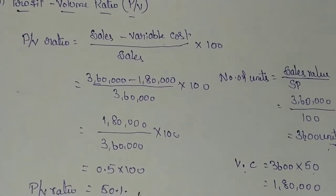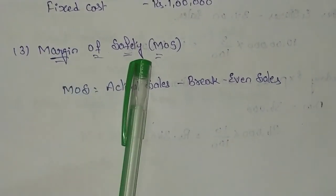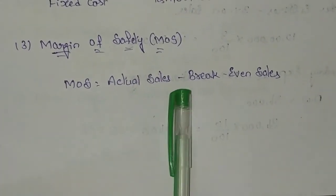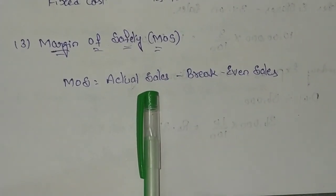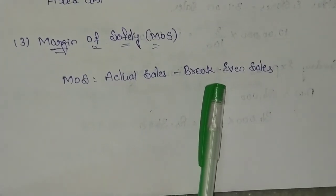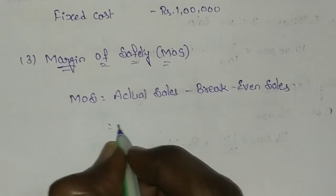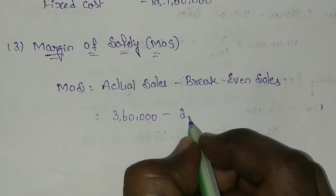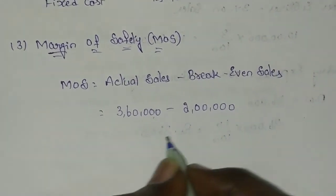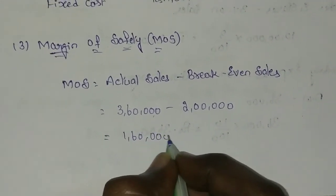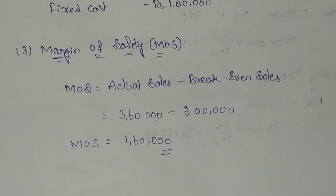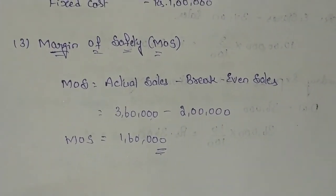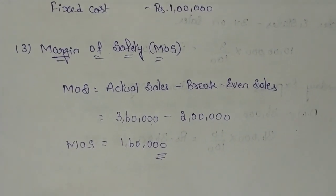Next, they are asking to calculate the margin of safety. The formula is actual sales minus breakeven sales. Actual sales given in the problem is 3,60,000, and breakeven sales value calculated is 2,00,000 (2 lakhs). The remaining value is your margin of safety. This is how we calculate breakeven point, profit volume ratio, and margin of safety.